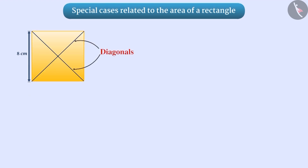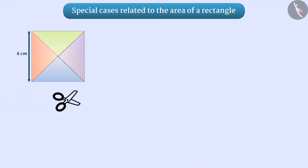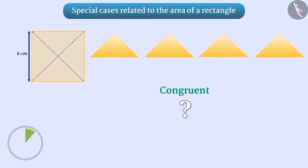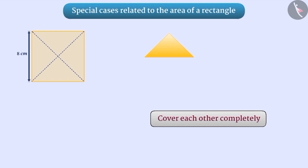Now take a square piece of paper of side 8 cm. Draw both its diagonals and divide it into four parts. You will get four triangles. If we place all the four triangles one on top of the other, they will cover each other completely and exactly.